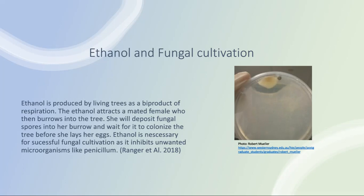The ethanol produced by eucalyptus trees is thought to be vital for successful mycangia to occur. Ethanol is produced as a byproduct of photosynthetic respiration and is a well-known antimicrobial. It will inhibit unwanted bacteria and fungi from taking residence in the tunnels, allowing the fungi necessary for the colony's survival to thrive with less competition. Most of the fungi cultivated by ambrosia beetles belong to the genera Ambrosiella and Raffaelea. When starting her new colony, the female will deposit fungal spores into her burrow and will not lay her eggs until the fungus is thriving.